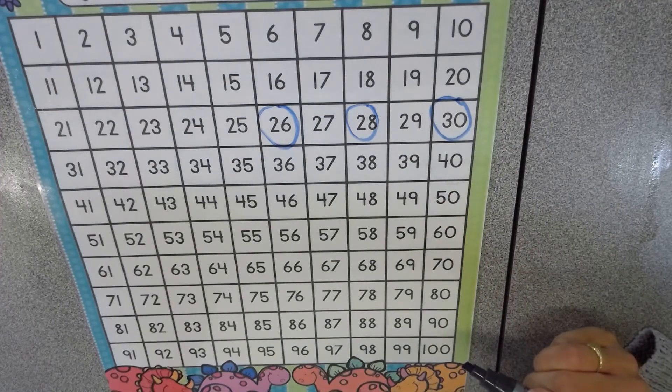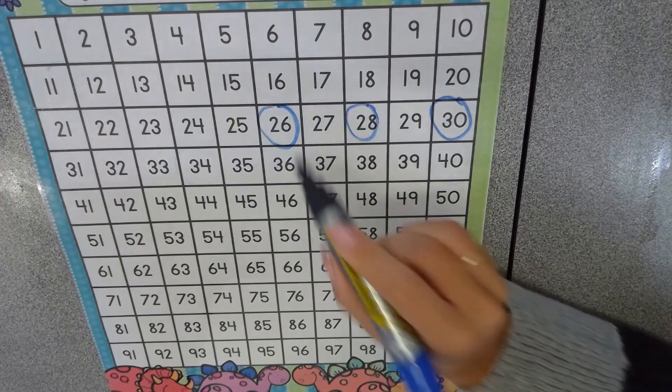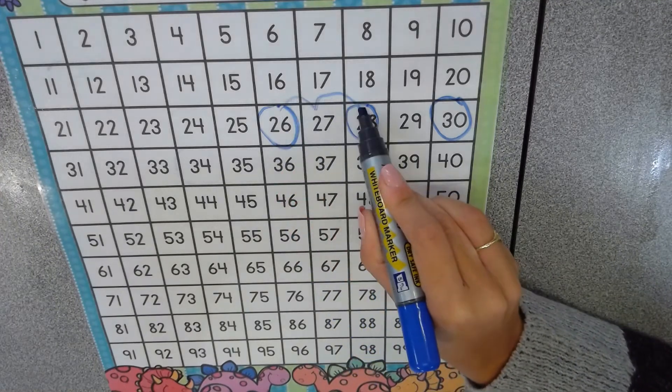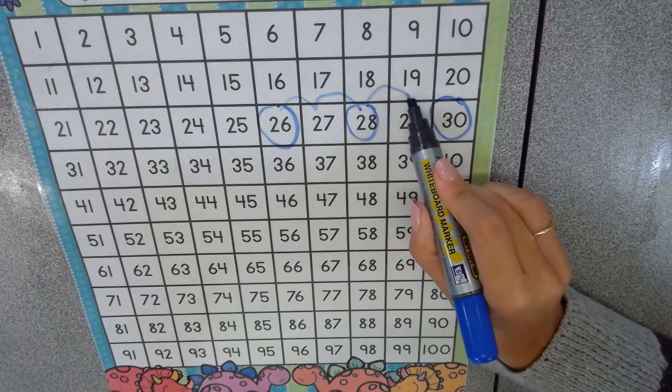To check if I've done this correctly, I can skip every second number. One, two, one, two.